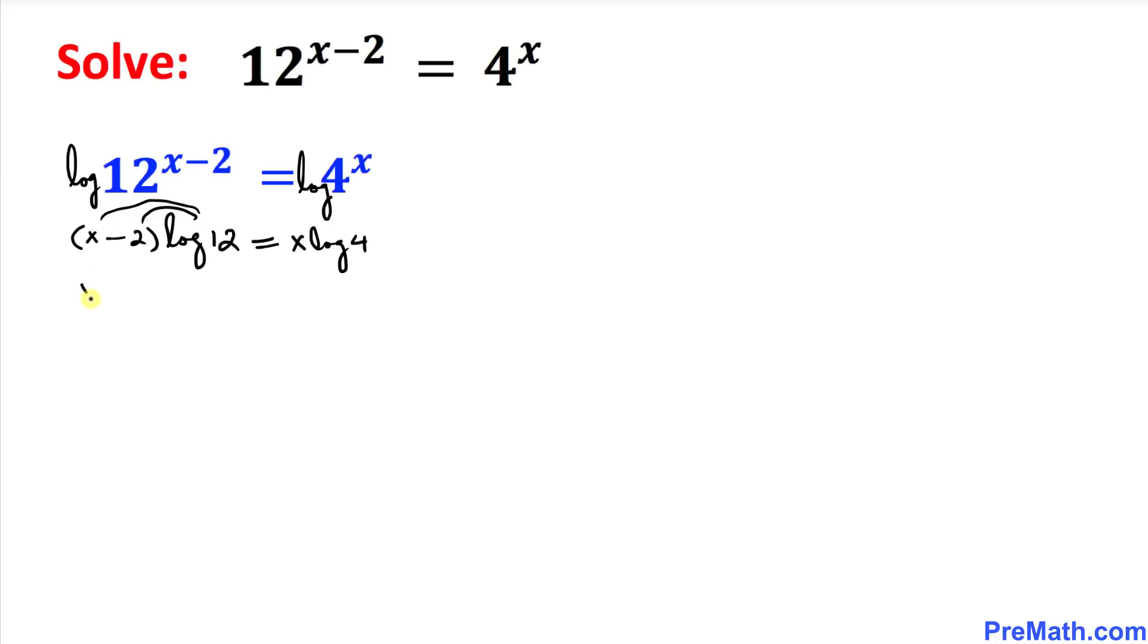So this could be written as x times log of 12 minus 2 times log of 12 equal to x times log of 4.